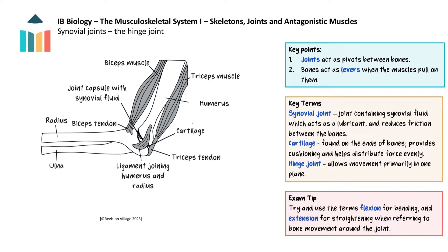Now that we've looked at how muscles move bones, let's shift our focus to the joints that connect bones and act as pivots allowing movement. Specifically we will explore synovial joints. These joints provide a wide range of movement and are crucial for our mobility. Synovial joints are formed when two bones come together and the space between them is filled with synovial fluid within the joint capsule.